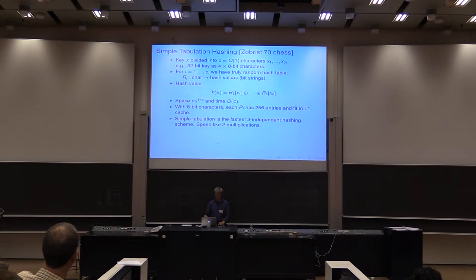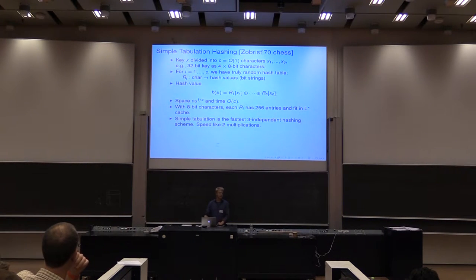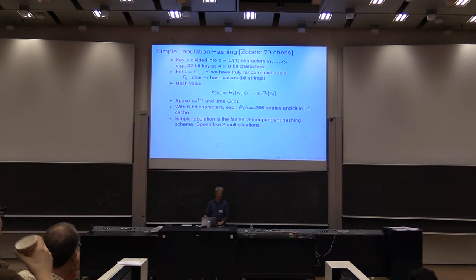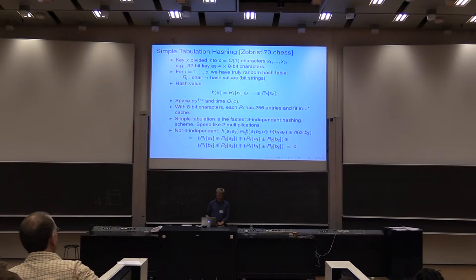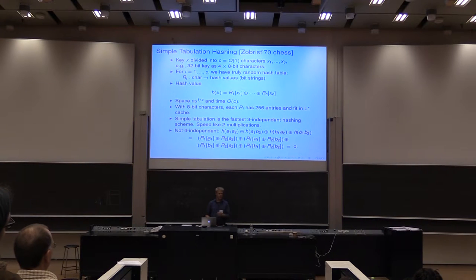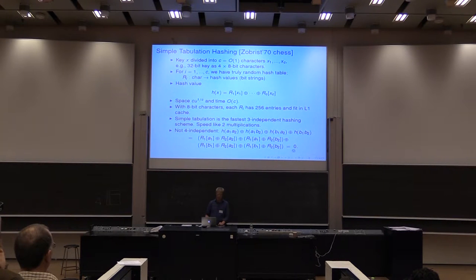Simple tabulation is on the computers I checked the fastest 3-independent hash scheme — with speed like two multiplications because the tables fit in a very fast cache. On more modern computers 16-bit characters work better, giving only two lookups for 32-bit keys. One thing we see is that it's not 4-independent — you can see this by looking at four keys with certain combinations of characters: when you XOR their hash values they always cancel to zero, so knowing three hash values gives you the fourth for free.